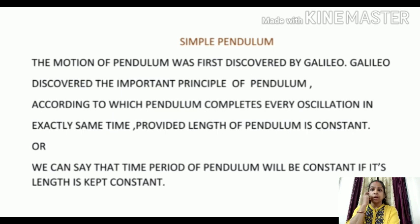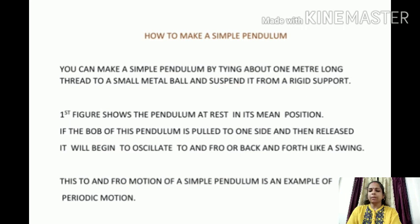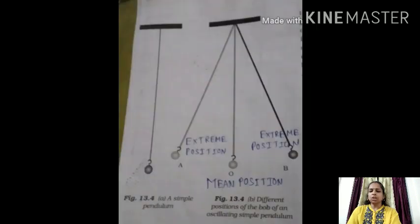A simple pendulum consists of a small metal ball suspended by a long thread from a rigid support. The metallic ball is called the bob of the pendulum. The motion of the pendulum was first discovered by Galileo, who found that a pendulum completes every oscillation in exactly the same time provided the length of the pendulum is kept constant. You can also make a simple pendulum by tying about 1 meter long thread to a small metal ball and suspending it from a rigid support.